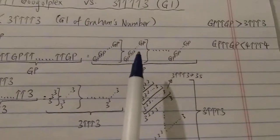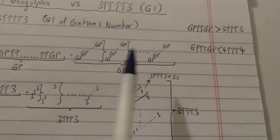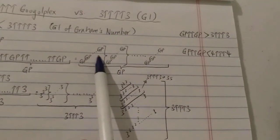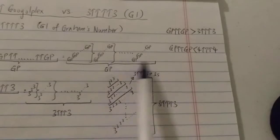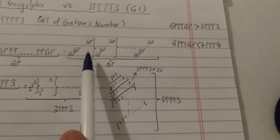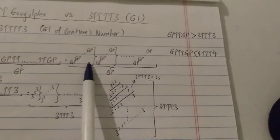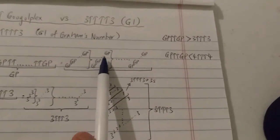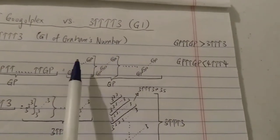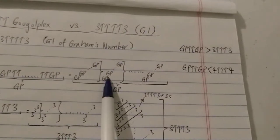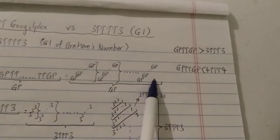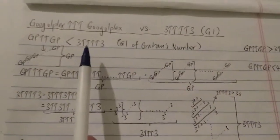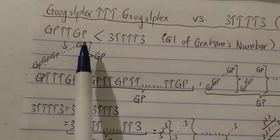It looks something like this — I know it's very hard to visualize four arrows. You start from right to left. The first level is a tetrational tower: Googleplex to the Googleplex to the Googleplex for a Googleplex number of times. The second level is the same thing but iterated a number of times equal to the first tower — so each successive tower is much, much bigger. You continue this process for a total of a Googleplex number of times. So Googleplex triple arrow Googleplex is way, way bigger than Googleplex double arrow Googleplex.